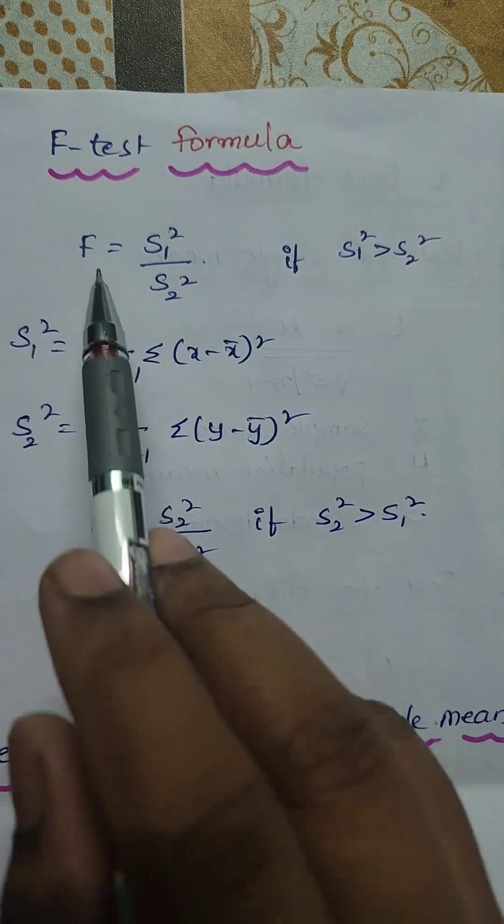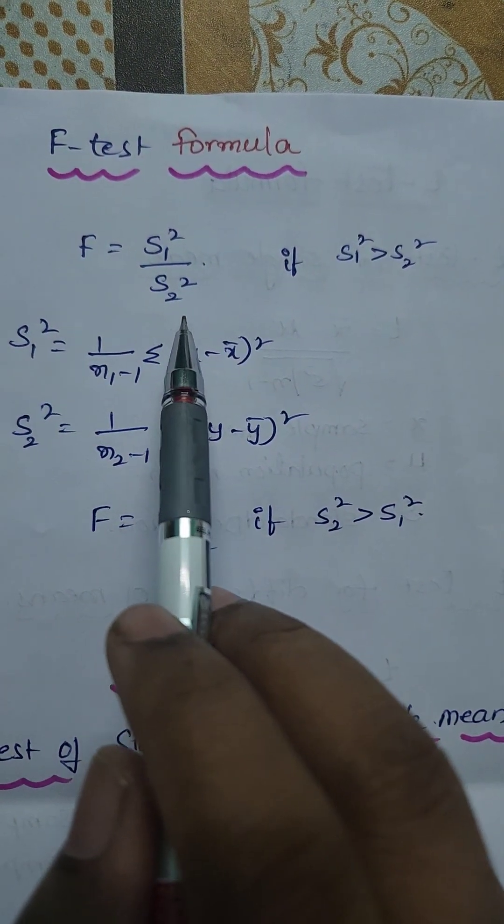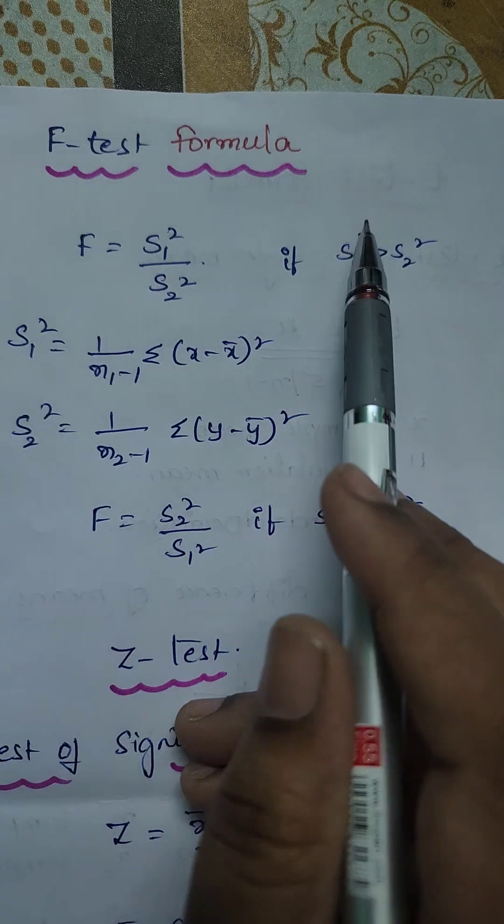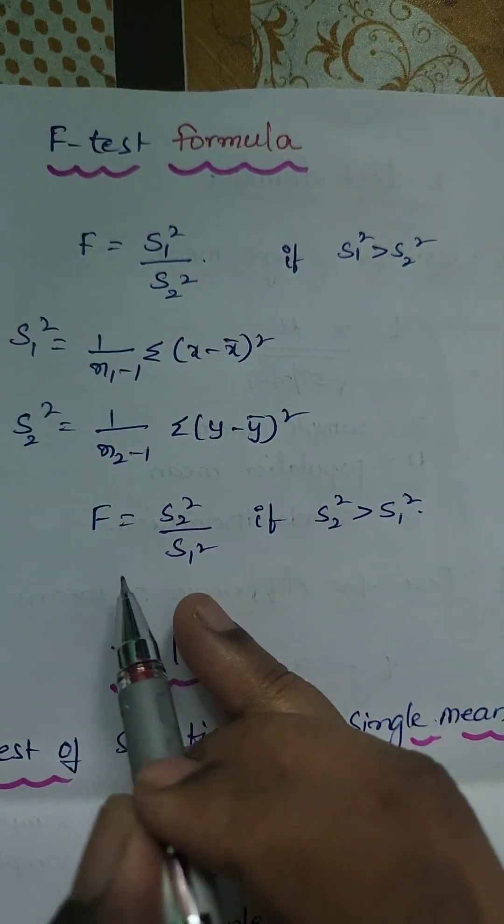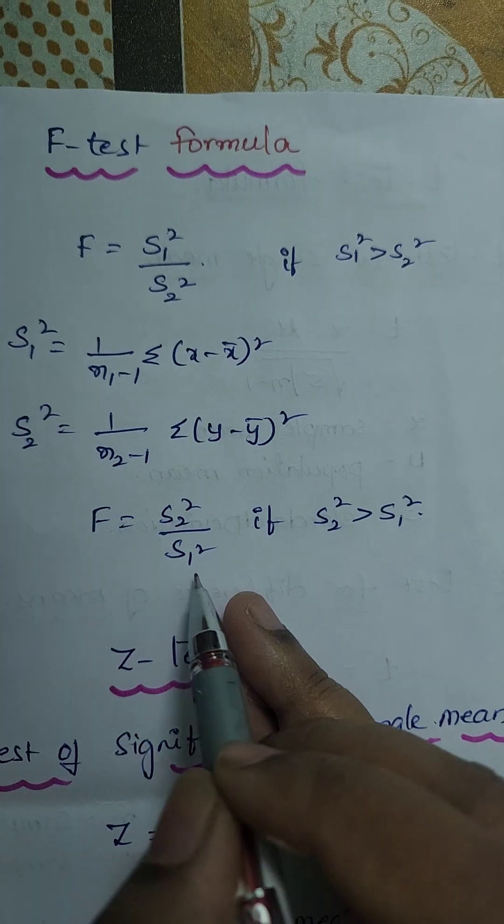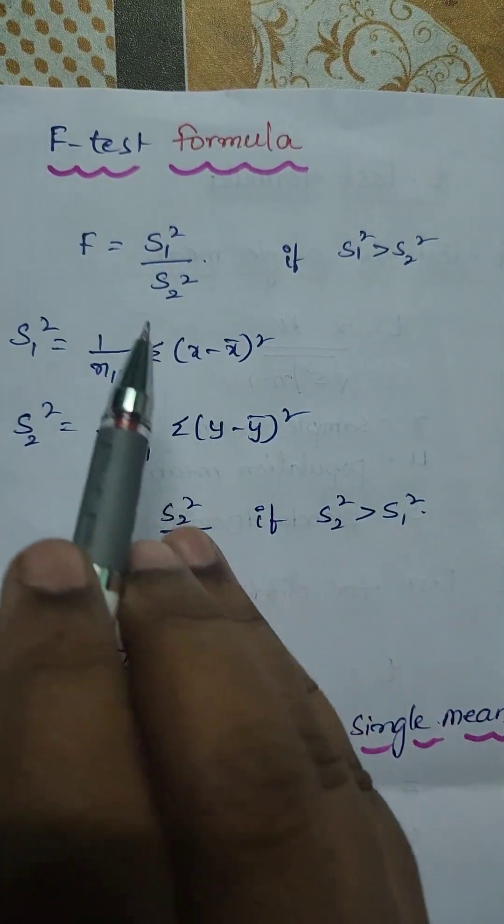Here we have two formulas for F. One is F equals S1 square upon S2 square if S1 square is greater than S2 square. And F is S2 square by S1 square if S2 square is greater than S1 square.